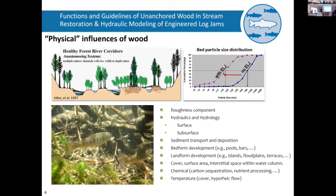Key is wood as roughness, and that's going to be a theme in general — the roughness it adds to channels can have a lot of effect on physical processes. We're talking about sediment conveying and sediment transport capacity. Generally when you add wood — here's a grain size distribution — when we put in logjams on the Elwha, you can see a major decrease in grain size that resulted once this kind of field of ELJs had gone in.